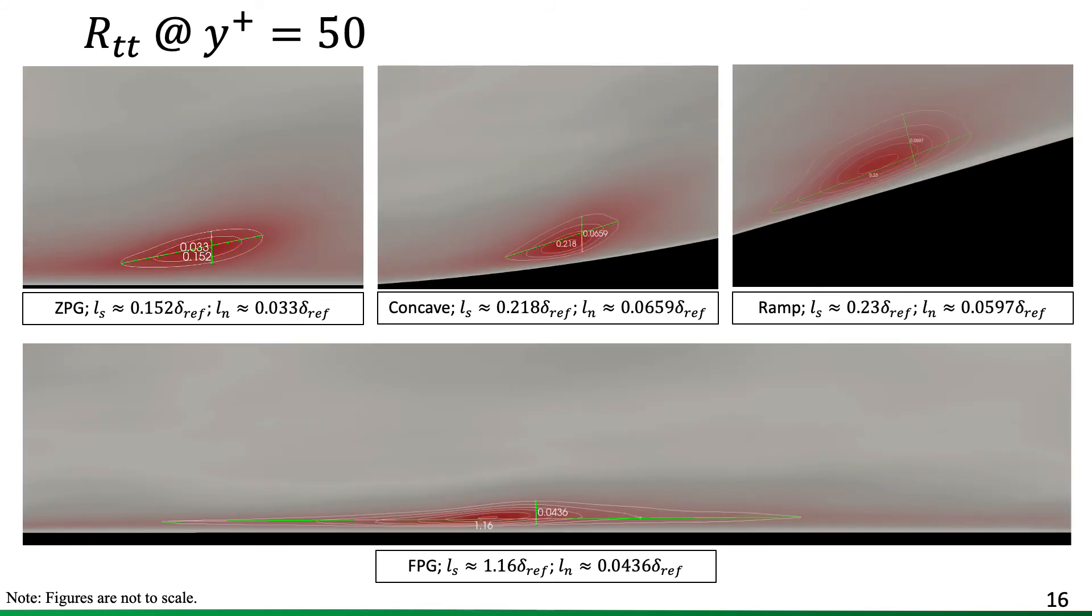And moving on to the log region, again, a very similar behavior to the one seen in the velocity. Be it here, some notable distinctions in terms of inclination and dimensions. And we see, again, the very long structures that are seen in the FPG region, which could probably be attributed to the reorganization of the flow and the higher strain rates that are experienced in this region.